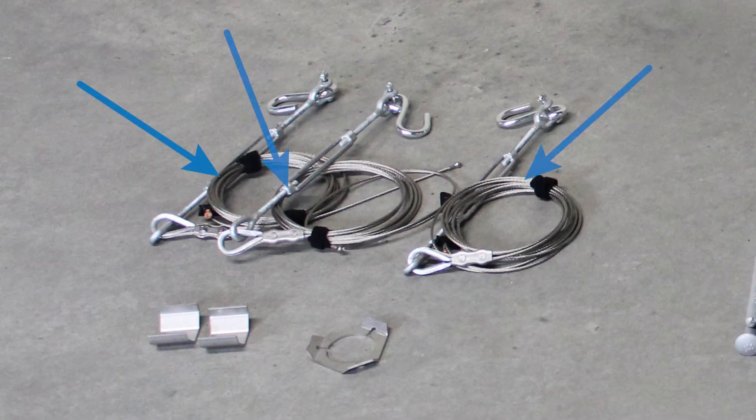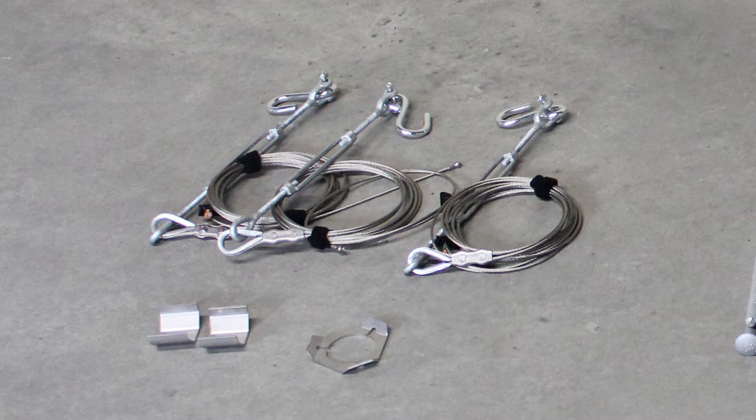The guy wire kit includes three guy wires, two guy ring collars, and the guy ring. The lightning rod must be removed prior to installing the guy wire kit.